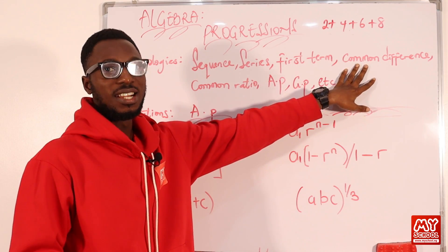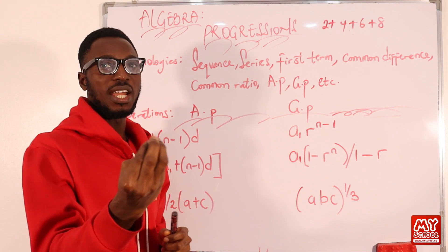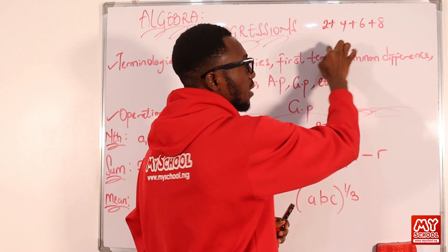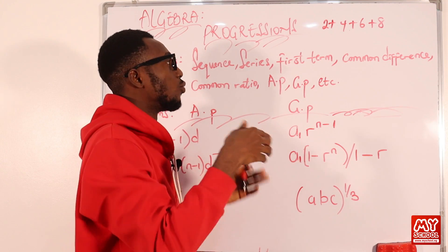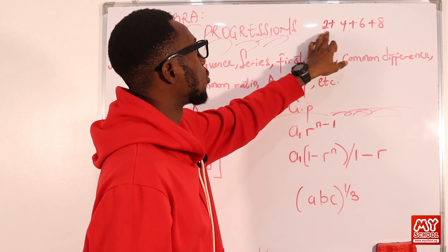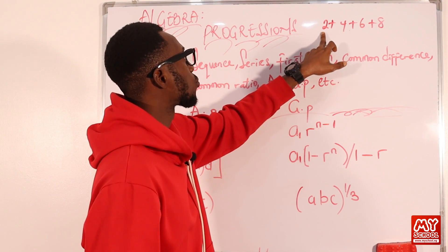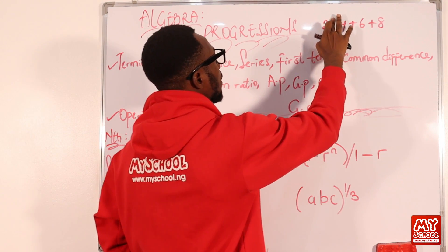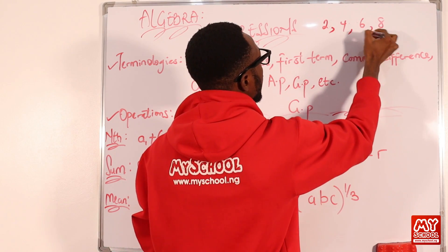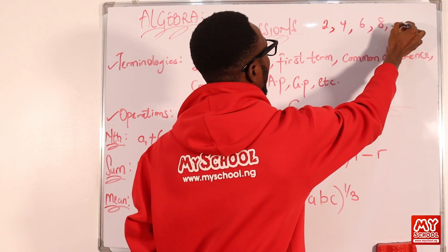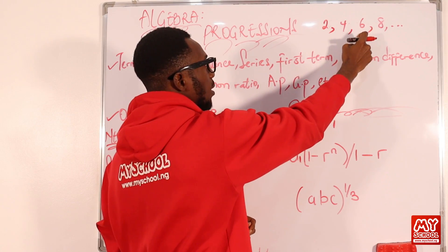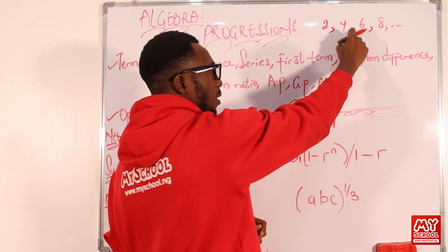We have the common difference. The common difference is that value that when you add it or subtract it from terms in a particular sequence, you get the progression you are looking for. So if you look at this sequence, what is the difference between the terms? To find the common difference, I take the second term minus the first term, or the third term minus the second term, the fourth term minus the third, and so on.